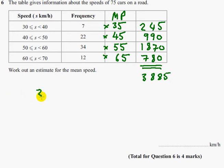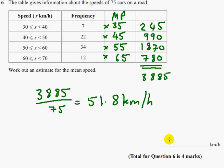So, remember, to find the mean, we need to find the total, and then divide it by the number of cars. And so we've got the total, so we need to divide it by 75, and that gives us 51.8 kilometres per hour. So I'll just write that on the line, and that's it.